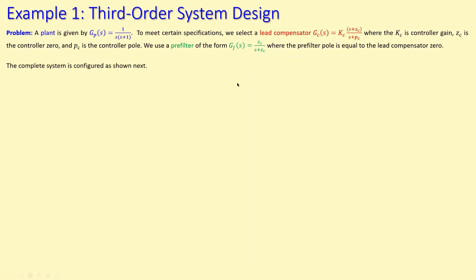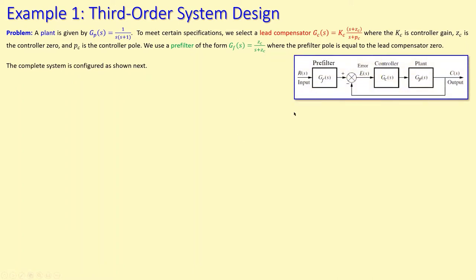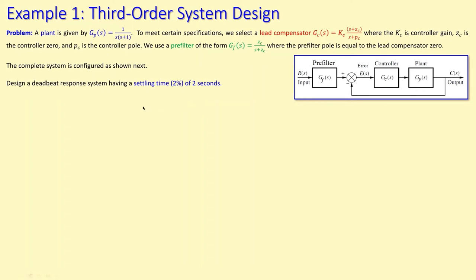Looking at the complete system: we have a pre-filter at the input, followed by a summation node, then the controller GC, then the plant GP, all in a unity gain feedback configuration. Only the plant is known at this point. The design goal is a deadbeat response with a settling time of two seconds.